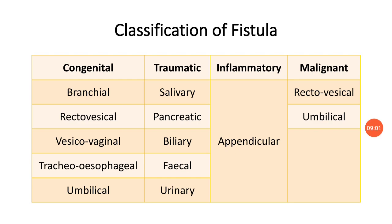Inflammatory fistula occurs after bursting of an abscess — for example, when an appendicular abscess bursts outside the skin, it will form an appendicular fistula. The last category is malignant fistula, when a malignant growth of one viscera infiltrates an adjacent viscera, forming a fistula. Examples include rectovesical and umbilical fistula.